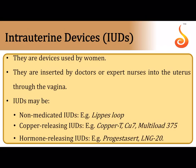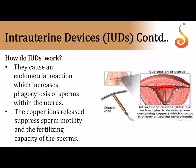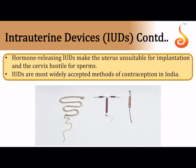Intrauterine devices (IUDs) are devices implanted inside the uterus and must be inserted by an expert nurse or doctor. There are three types: non-medicated (e.g., copper T — a T-shaped device wound with copper wire placed inside the uterus), copper-releasing, and hormone-releasing IUDs. Copper-releasing IUDs increase phagocytosis of sperm, suppress sperm motility, and reduce fertilizing capacity. Hormone-releasing IUDs make the cervix hostile to sperm and make the uterus unsuitable for implantation. IUDs are the most widely accepted contraceptive method in India.